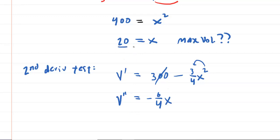Now, notice if you plug in this X value. So we're going to do V double prime of 20. You would get negative six fourths times 20. Notice the actual value doesn't matter. The only thing that matters is that it comes out to be a negative number. It's actually going to be negative 30.